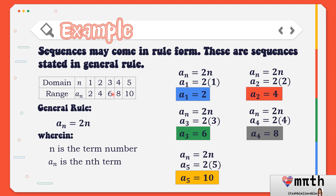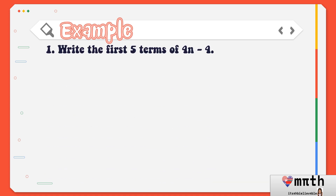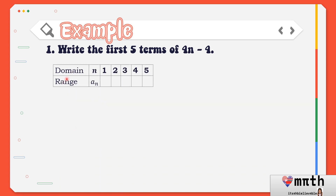In order to get the terms in each sequence, we simply substitute the domain or value of n in our general rule. Let us have another example. For example number 1, write the first 5 terms of 4n minus 4. This is our general rule, and our domain, as always, will be 1, 2, 3, 4, 5 to get the first, second, third, fourth, and fifth terms respectively.